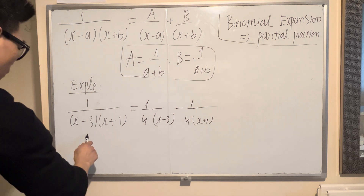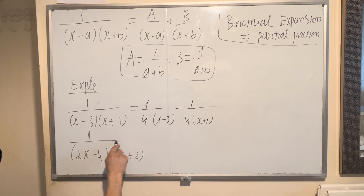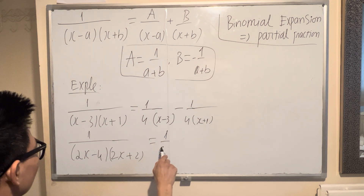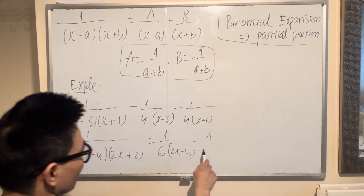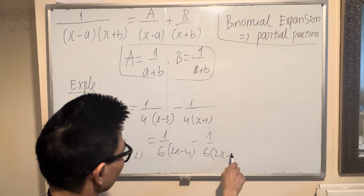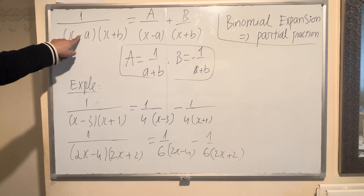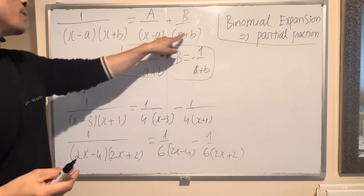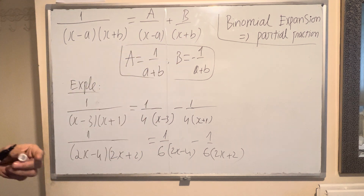So one more time: 1 over x times (x plus 4). The first fraction A is 1 over 4, divided by x. Then divided by (x plus b). B follows its sign and A follows its sign. So that's the first situation. The second one I'll show you now.